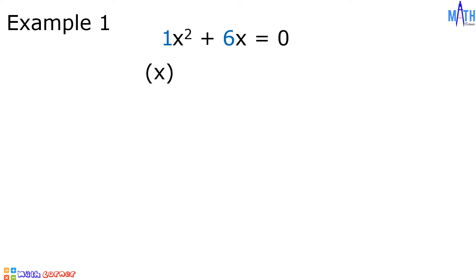If we factor out x, we are left with x plus 6, since x squared divided by x is equal to x, and 6x divided by x is equal to 6. So we have x times x plus 6 is equal to zero.